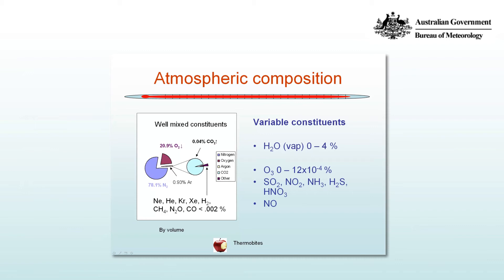Then we turn to the variable constituents of the atmosphere. The key one for weather forecasting is water vapour — that is, the gas phase of H₂O — and that's anywhere between 0 and 4%, depending upon a number of factors, including height in the atmosphere, and the relative amounts of evaporation and condensation, which is in turn controlled by things like water availability and the temperature.